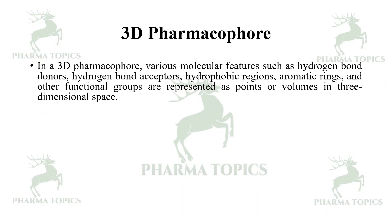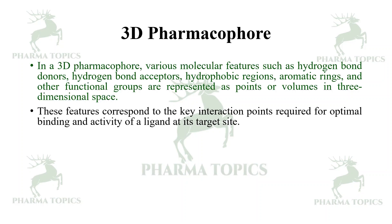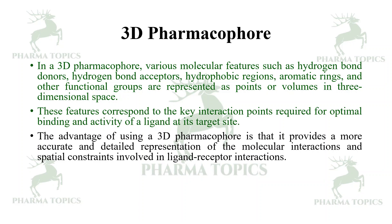In 3D pharmacophore, various molecular features such as hydrogen bond donors, hydrogen bond acceptors, hydrophobic regions, aromatic rings, and other functional groups are represented as points or volumes in three-dimensional space. These features correspond to key interaction points required for optimal binding and activity of a ligand at its target site. The advantage of 3D pharmacophore is that it provides a more accurate and detailed representation of the molecular interactions.